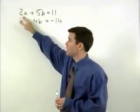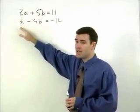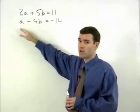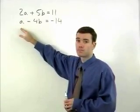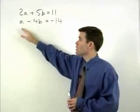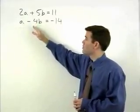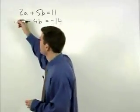Notice that we have a 2a in our first equation. If we had a negative 2a in our second equation, then the a's would cancel out. In order to create a negative 2a in the second equation, we simply multiply both sides of the second equation by negative 2.